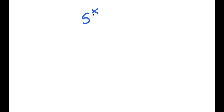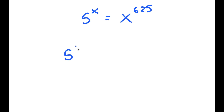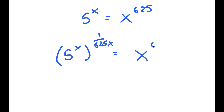In this video, I'm going to solve the equation 5 to the power of x is equal to x to the power of 625. To solve this, I'm going to first take the power of 1 over 625x on both sides.